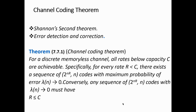This channel encoding adds redundancy bits, and these bits are helpful for error detection as well as error correction purposes. The channel coding theorem is also called Shannon's second theorem, and it is used for error detection and error correction purposes.